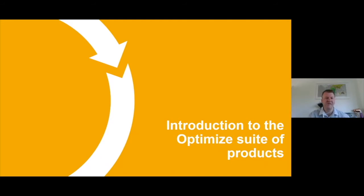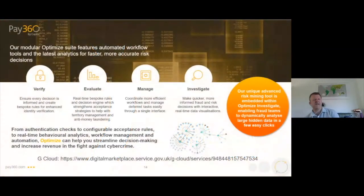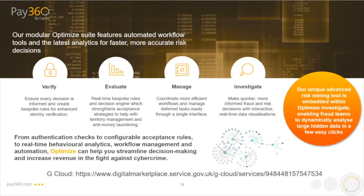I'm going to give a quick introduction to the Optimised suite of products. This is a fraud and risk engine built by ourselves, covering two core areas: fraud and identity verification. Today's focus is the Verified section — KYC customer checks. We also have a transactional fraud engine based around real-time rules, link analysis, and managing cases. Whilst transactional fraud may not be huge in the public sector, there is a tool available. The platform is also on G-Cloud version 12, where full information on both the transactional and Verify platform is available.